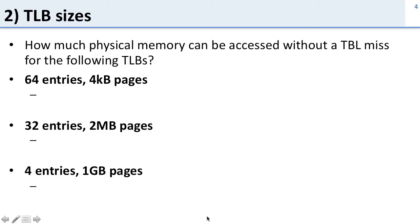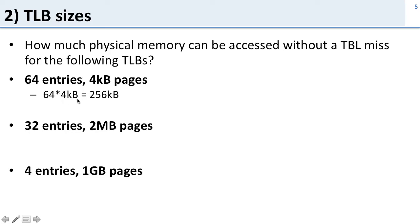Now let's take a look at TLB sizes. We have a TLB and we want to see how much memory we can access with what's in the TLB. With a 64-entry TLB and four kilobyte pages, it's simply 64 entries times four kilobytes — each entry can access four kilobytes — so that's 256 kilobytes of data without a TLB miss.